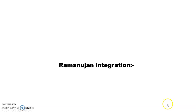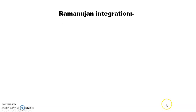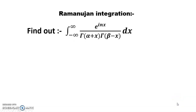Hello dear friends, welcome to my channel. Today's discussion is Ramanujan integration. We need to find the integral from minus infinity to infinity of e to the power inx times gamma(alpha plus x) times gamma(beta minus x) dx. This is very simple.